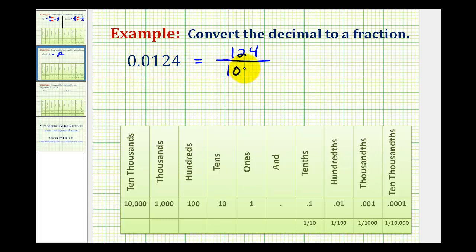So 1, 2, 3, 4. So there's the decimal written in fraction form. But then again, just to double check this, looking at our place value chart, we have 1, 2, 3, 4 digits to the right of the decimal point, which means this would be 124 ten thousandths.